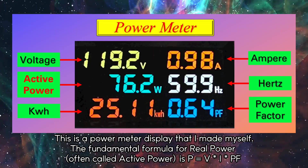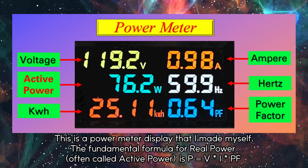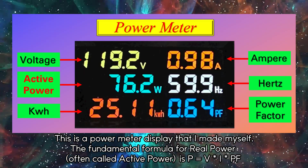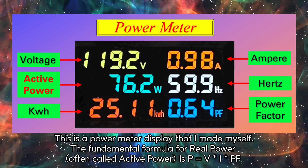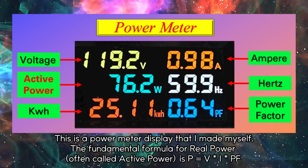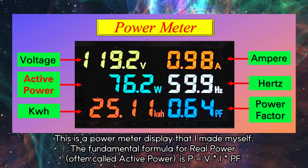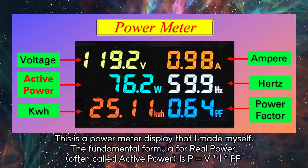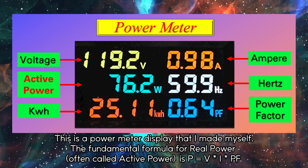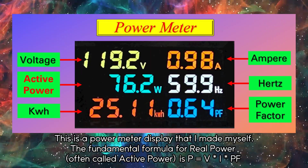This is a power meter display that I made myself. The fundamental formula for real power, often called active power, is P = V × I × PF, where P is power in watts, V is voltage in volts, I is current in amperes, and PF is the power factor. This formula applies to single-phase AC circuits.